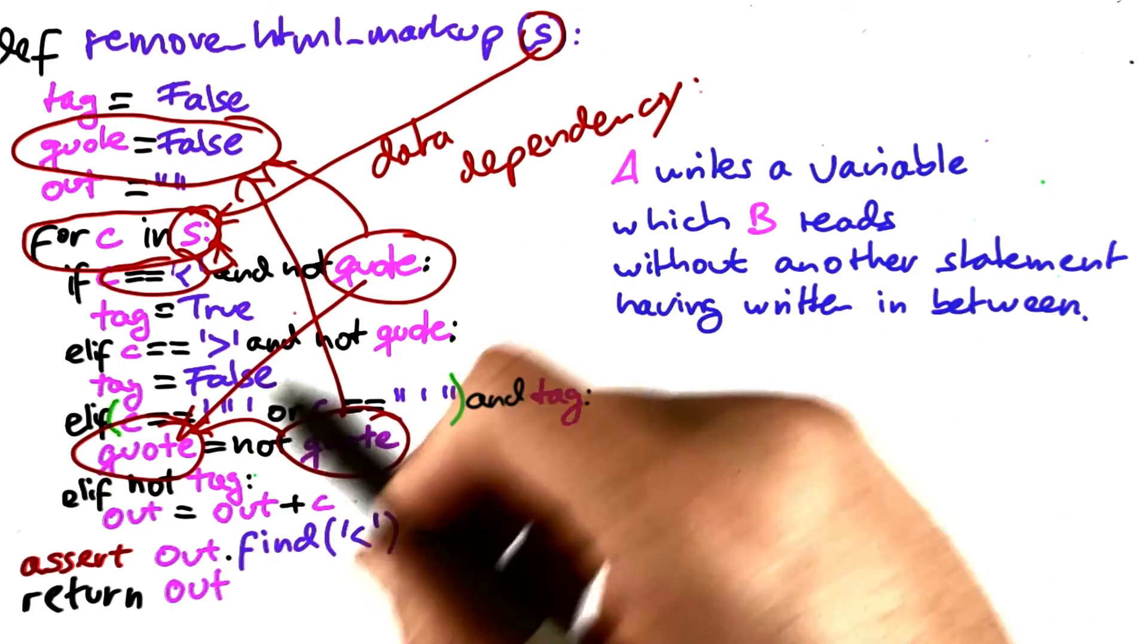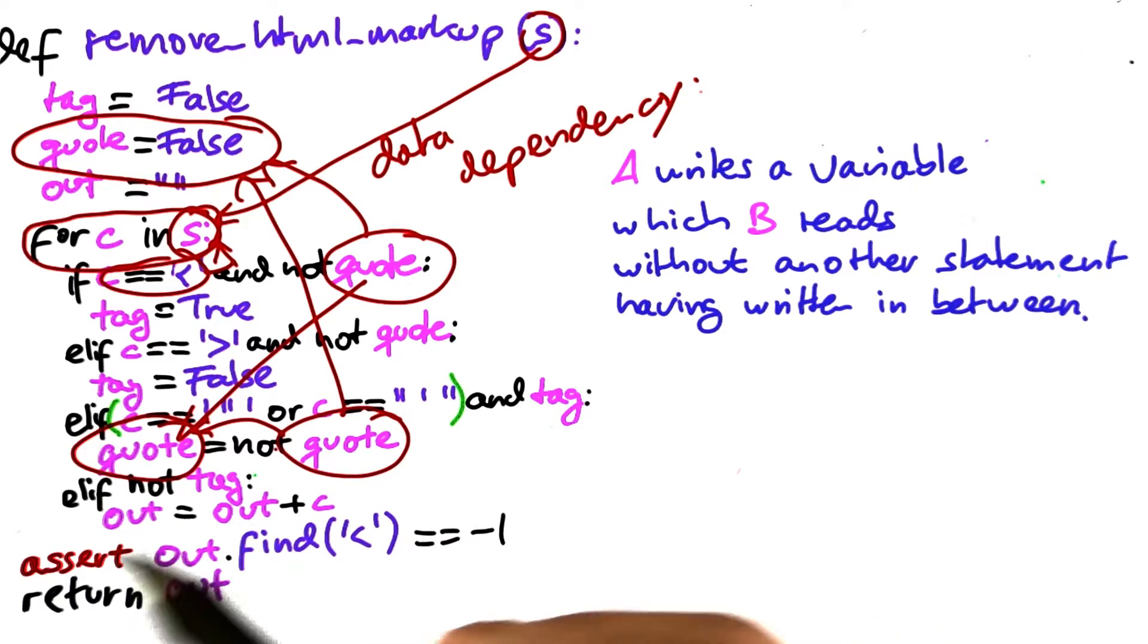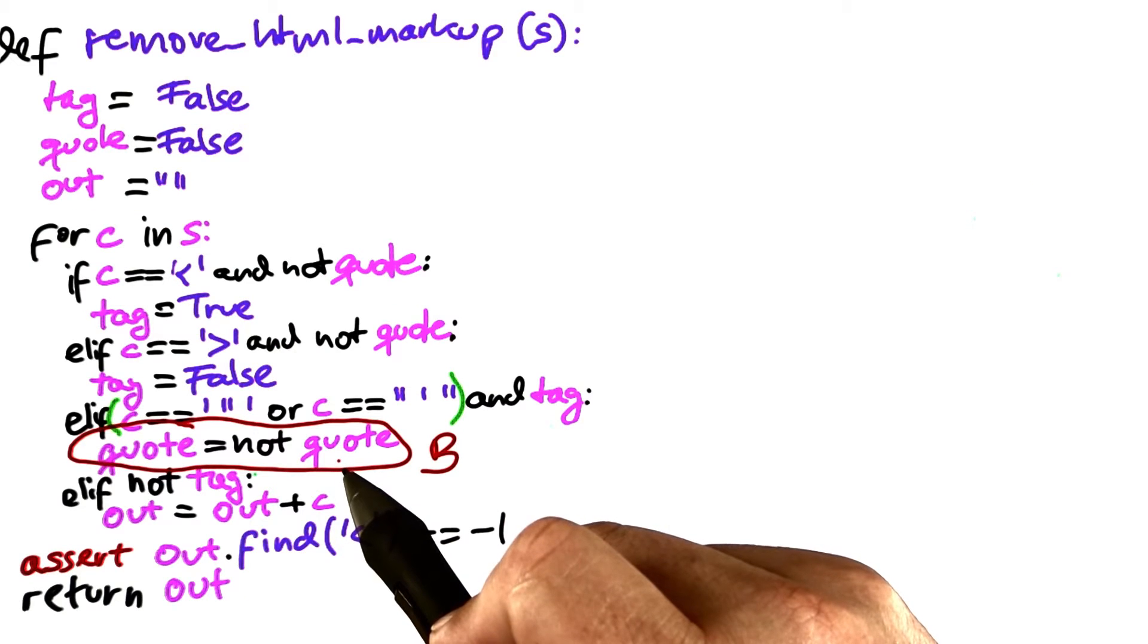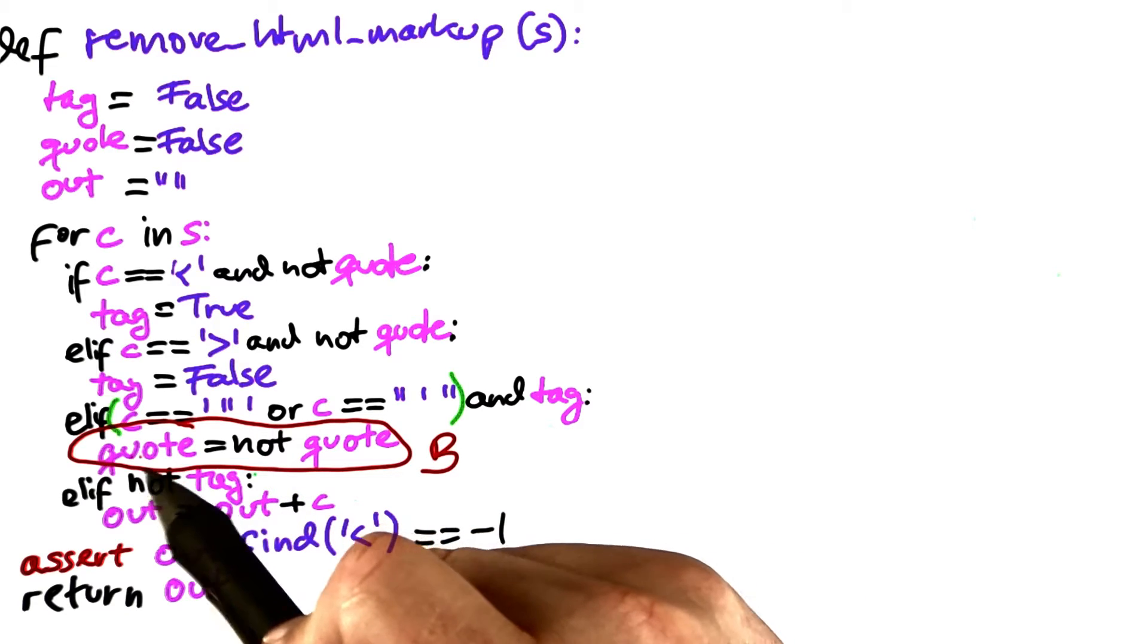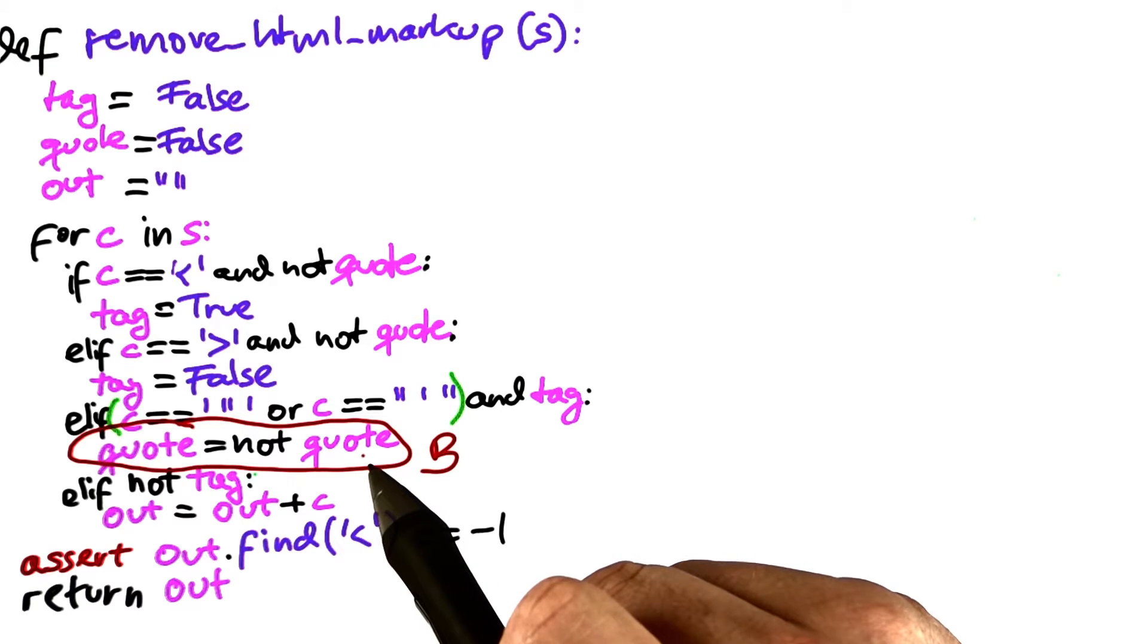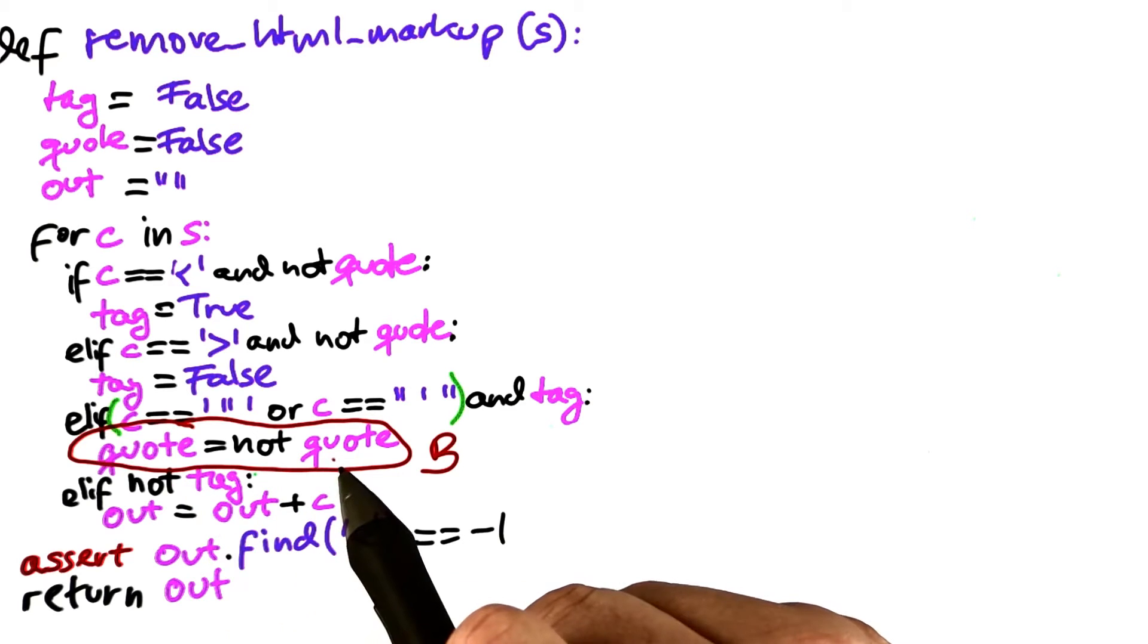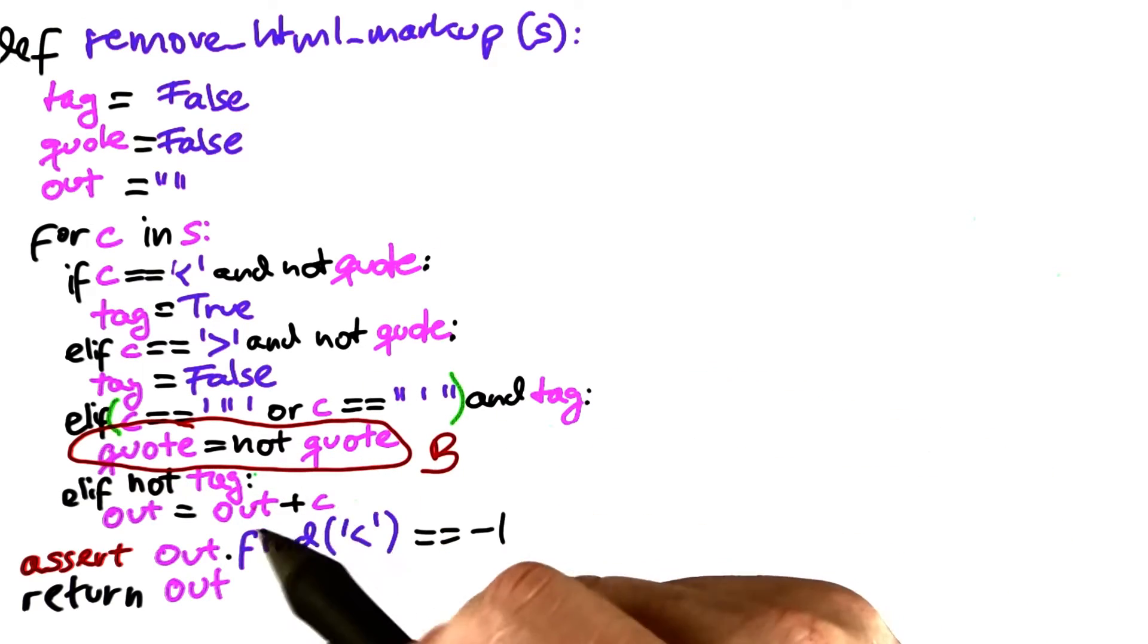It is precisely along these relationships that we structure our reasoning. Where does this value come from and where was it set? If we take a look at this statement, however, we will quickly find that data dependencies are not enough because the value of quote in here may depend on the earlier value of quote, but we also need to take into account that this statement had to be executed in the first place. In order to be executed, it depends on earlier conditions.